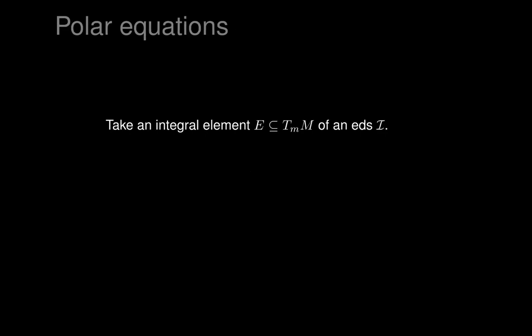We want to build integral elements step by step using only linear algebra. Suppose you already have an integral element E of an exterior differential system I on a manifold M. Take a single integral element and try to make it bigger: how can we find a vector to add to E and still have an integral element? We pick some vectors e_1 to e_k from E — they don't have to be a basis, span, or be linearly independent. They could be any vectors from E.